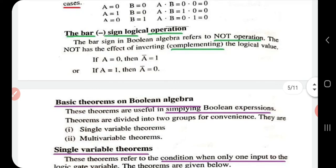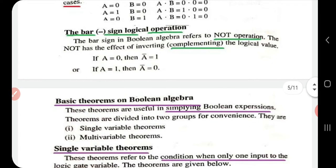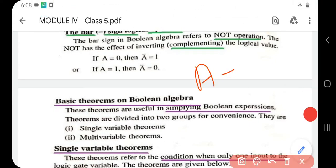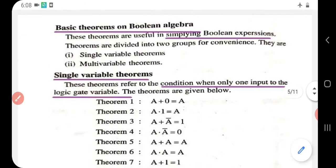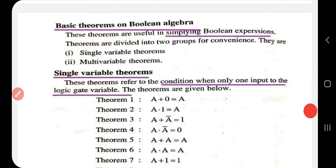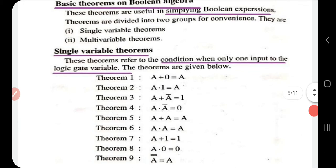The bar sign represents the NOT operation, which is the complement. If a is one, then a-bar equals zero. If a is zero, then a-bar equals one.